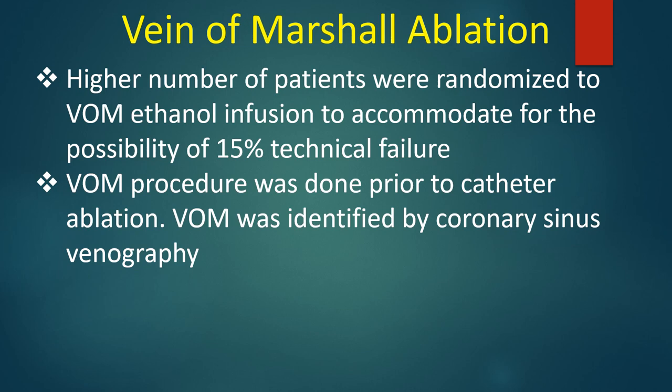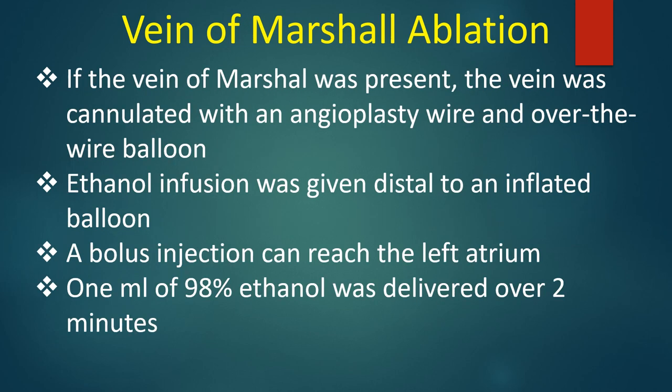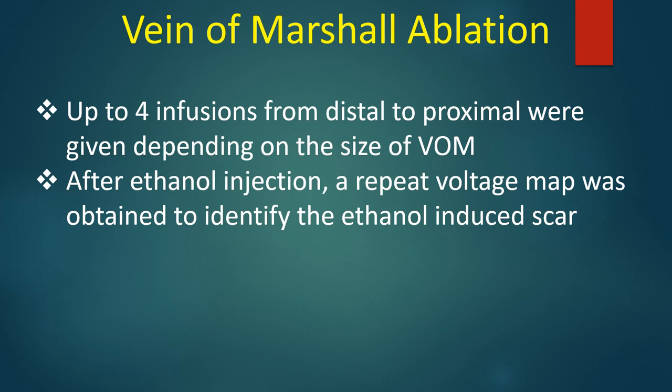Vein of Marshall was identified by coronary sinus venography. If the vein was present, it was cannulated with an angioplasty wire and over-the-wire balloon. Ethanol infusion was given distal to an inflated balloon, as a balloonless injection can reach the left atrium. 1 mL of 98% ethanol was delivered over 2 minutes, with up to 4 infusions from distal to proximal depending on the size of the Vein of Marshall.